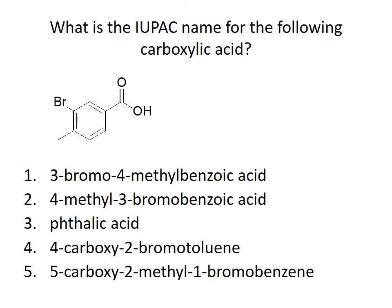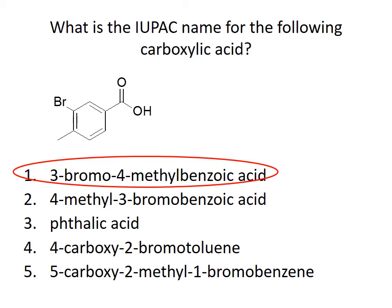Go ahead and name this compound. It's going to be named as a benzoic acid. Looking at the ring, I can see on the number three carbon there's a methyl and there's also a bromo substituent. To decide the numbering, I always give the lower number to the substituent that comes first alphabetically. So the correct name is 3-bromo-4-methylbenzoic acid.